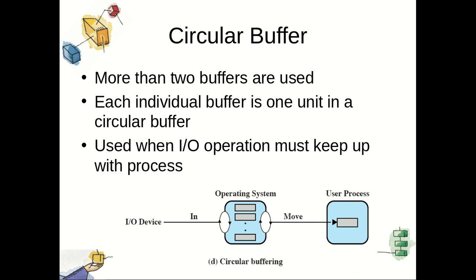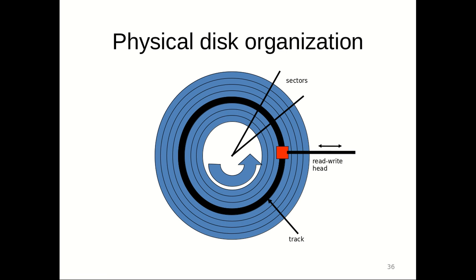Next is the circular buffer. In case of circular buffer, more than two buffers are used, forming a cycle for all these buffers. Each individual buffer is one unit in a circular buffer, used when IO operations must keep up with the processes. This collection of buffers is treated as a circular buffer to allow first-in first-out operations.